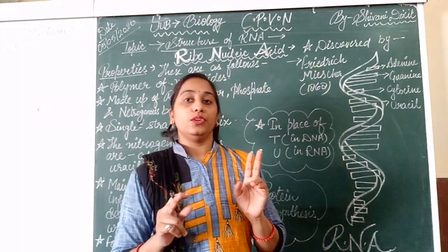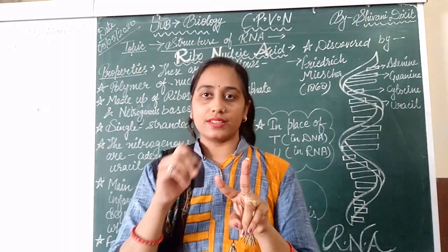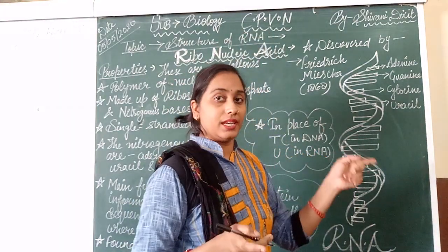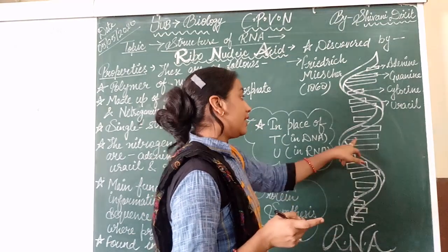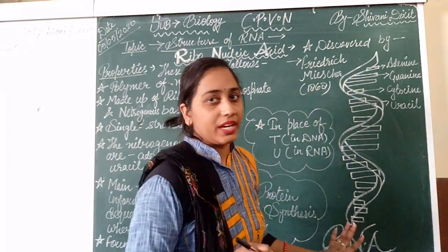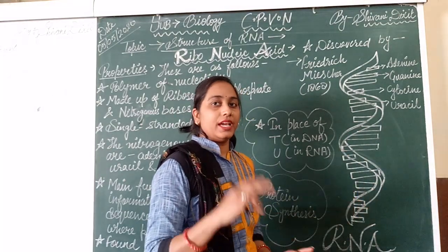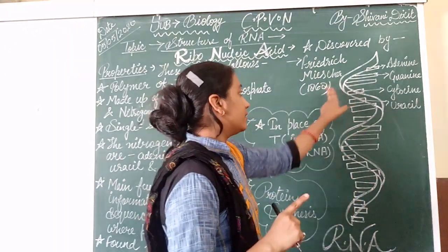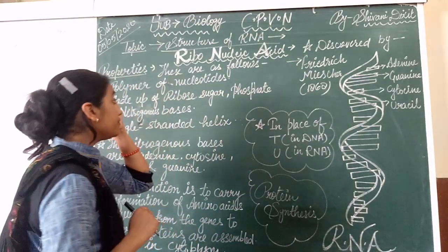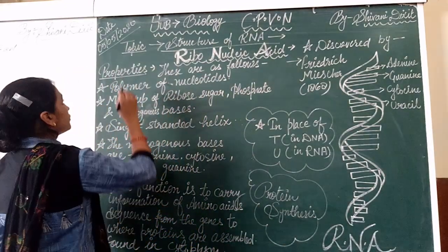What is the structural difference? In DNA, you have observed that two strands are there — DNA has a double helical structure. RNA is a single helical structure; it has one strand. DNA has two strands, RNA has a single strand.